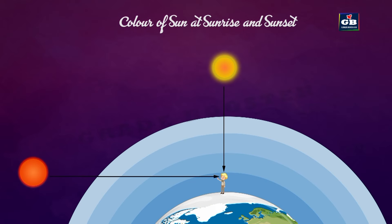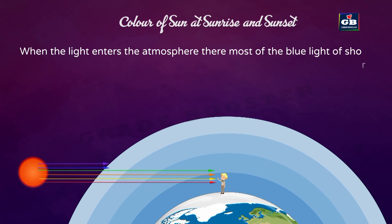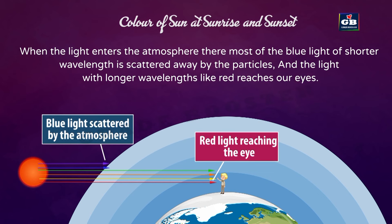Color of the sun at sunrise and sunset: the sun appears a specific red color during sunrise and sunset. During these times, light from the sun passes through a thick layer of atmosphere over a larger distance before reaching our eyes. Most of the blue light of short wavelength is scattered away, so the remaining red light reaches our eyes — that's why the sun appears red during sunrise and sunset.